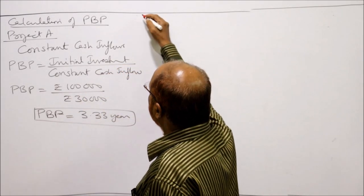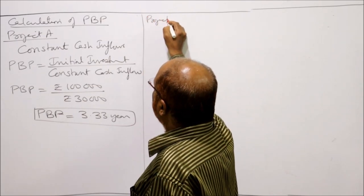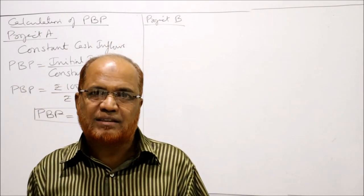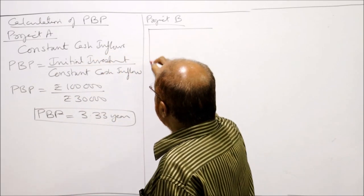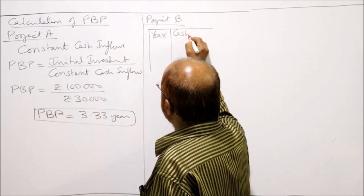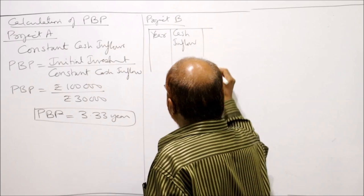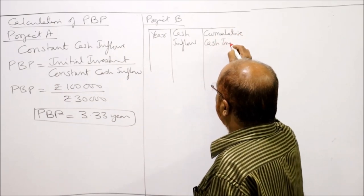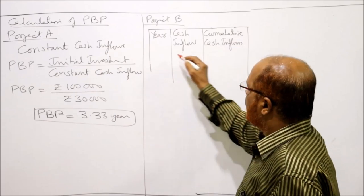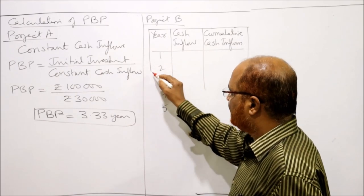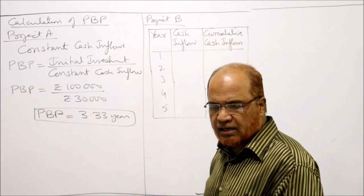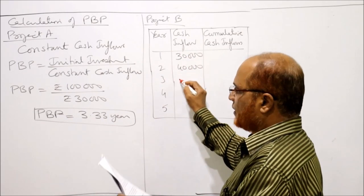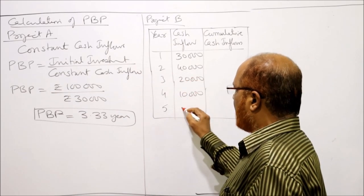Now we come to Project B. In Project B, the annual cash inflows are not constant, so we apply the cumulative cash inflow method. We set up three columns: Year, Cash Inflows, and Cumulative Cash Inflows. The years are 1 through 5, and the cash inflows are 30,000; 40,000; 20,000; 10,000; and 5,000.